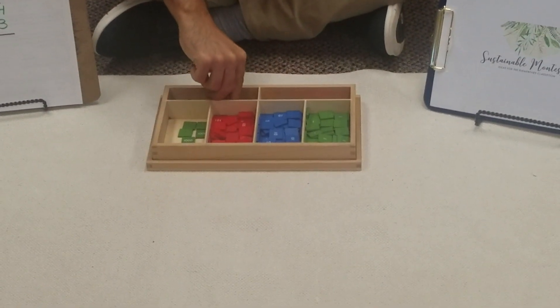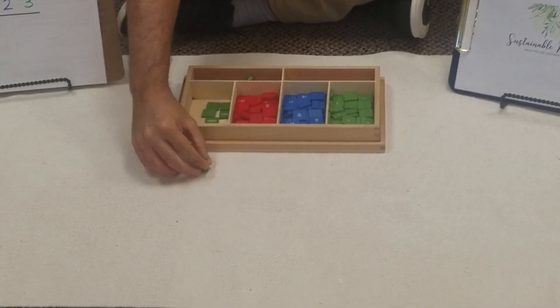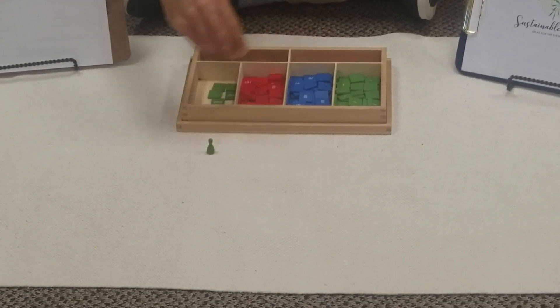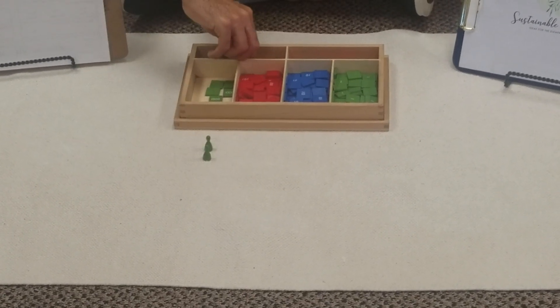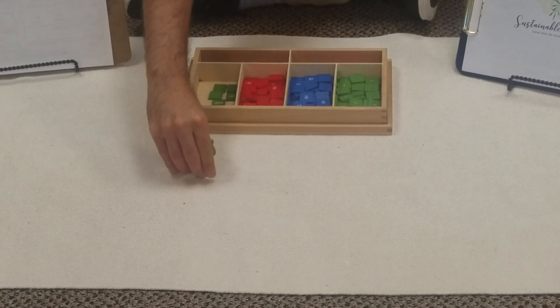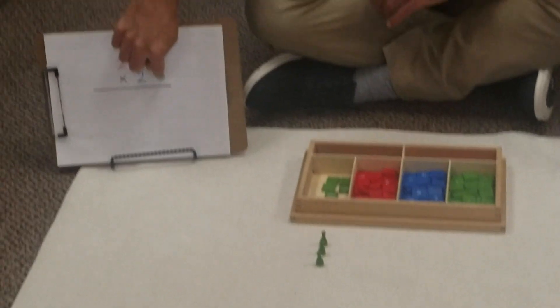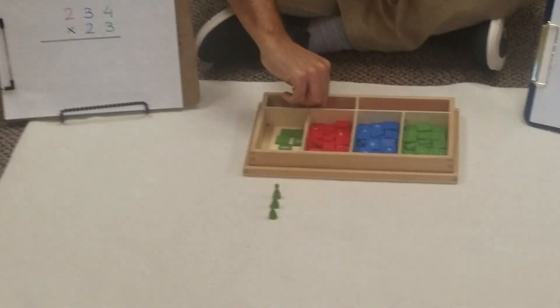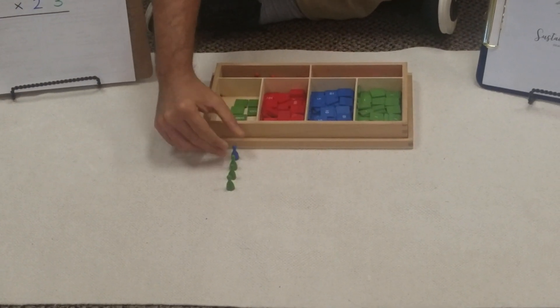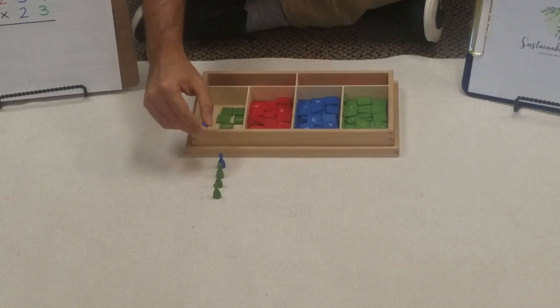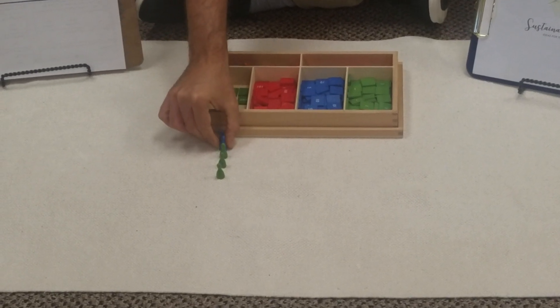So we're going to start like we did when we did multiplication with a single digit and we're going to start putting our units. So we have our 3 units of our multiplier. And then we have 2 tens. And we're going to use the blue skittles representing those each 10.